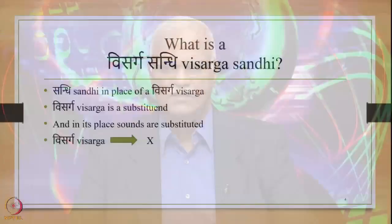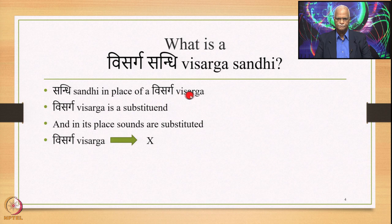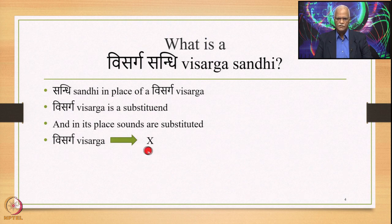Visarga Sandhi is a Sandhi in place of a Visarga. We know that Visarga is a substituent or Sthani, and in its place sounds are substituted. So we have Visarga as an input as a Sthani and X refers to those substitute sounds — they are the Adeshas. This is called Visarga Sandhi.